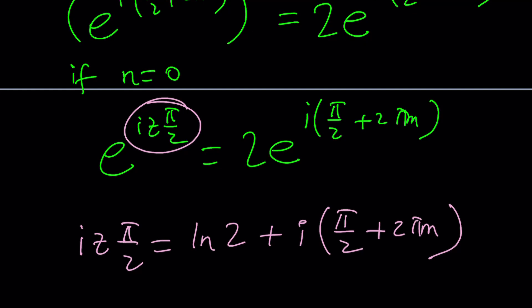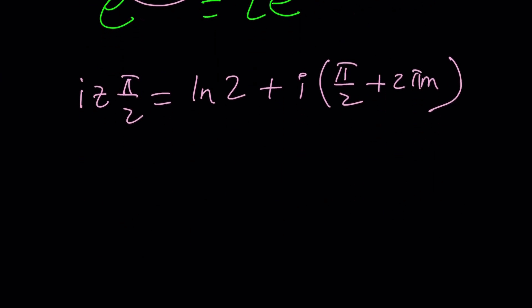Make sense? Now, to solve for z, we're going to divide everything by i pi over 2. So it's going to look like this. ln 2 divided by i pi over 2.